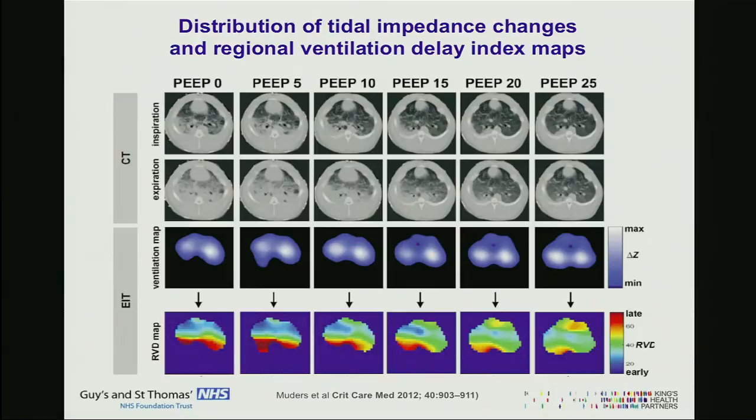EIT can also tell us how uniform the lung is at a certain level of PIP — here there is lots of early ventilation and delayed ventilation, whereas here it is more uniform. So EIT doesn't just tell us about volume, but about the physiology and behaviour of the lung.